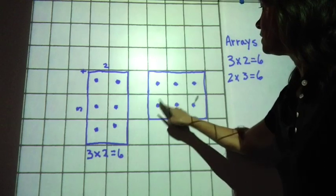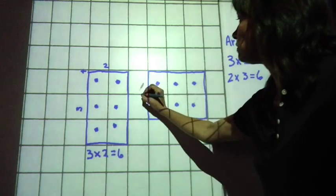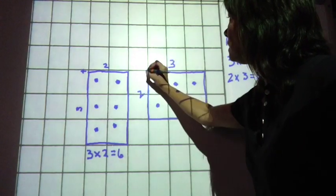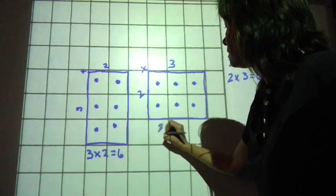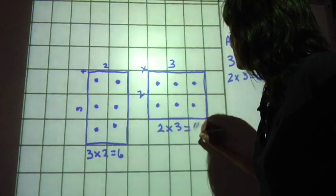Fill that in and you can see 1, 2, 3, 4, 5, 6. We have 2, 3. 2 times 3 equals 6.